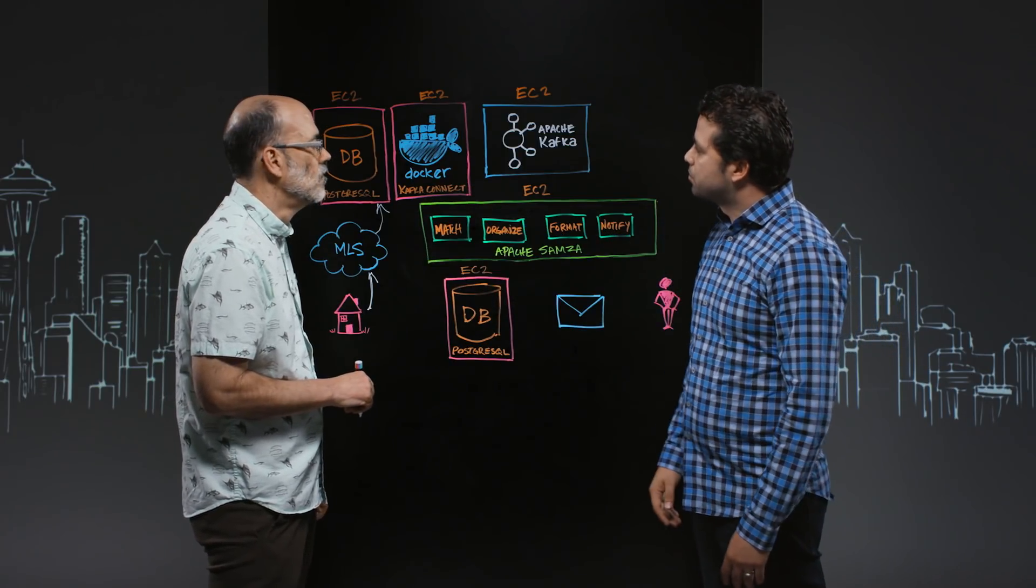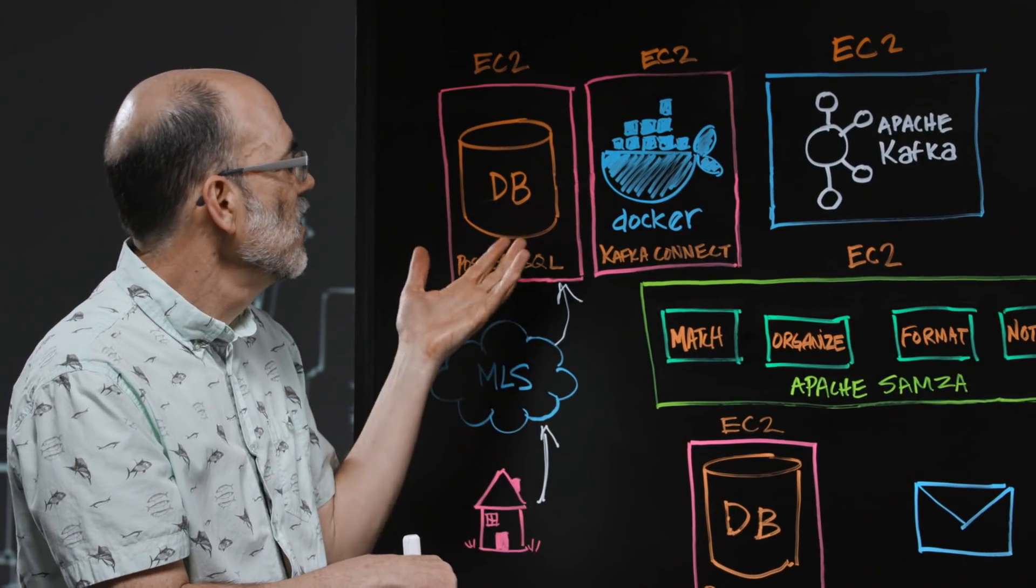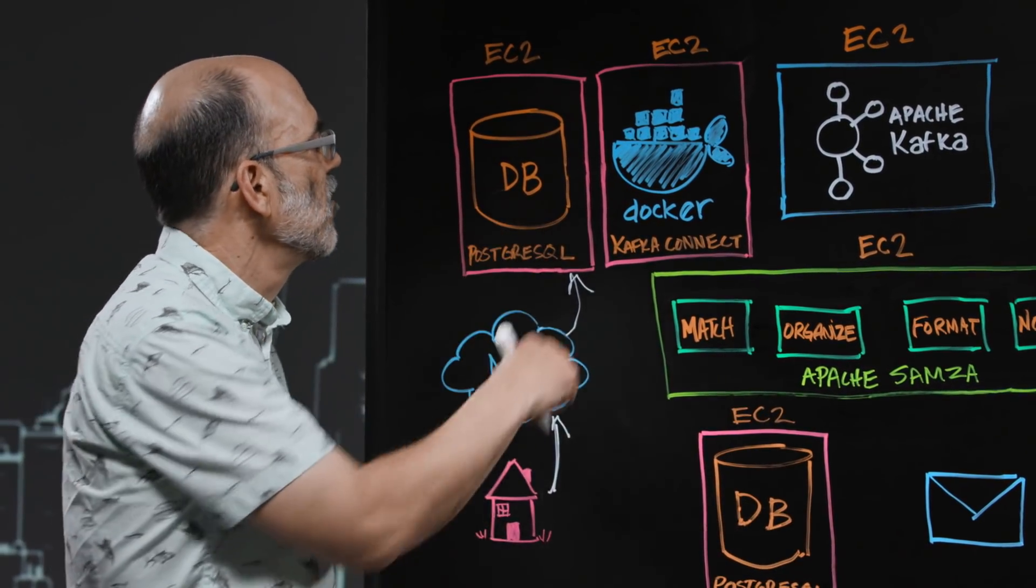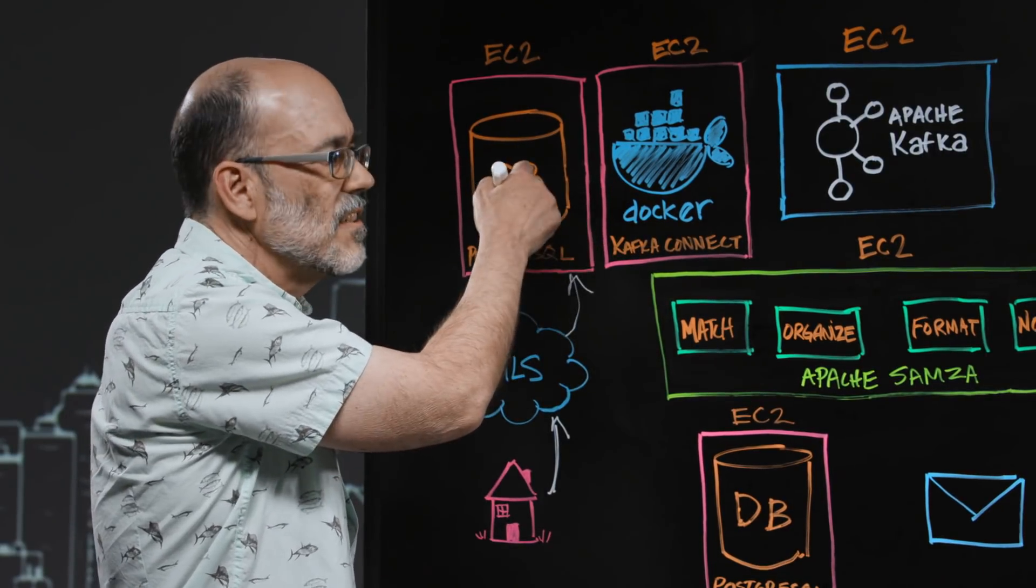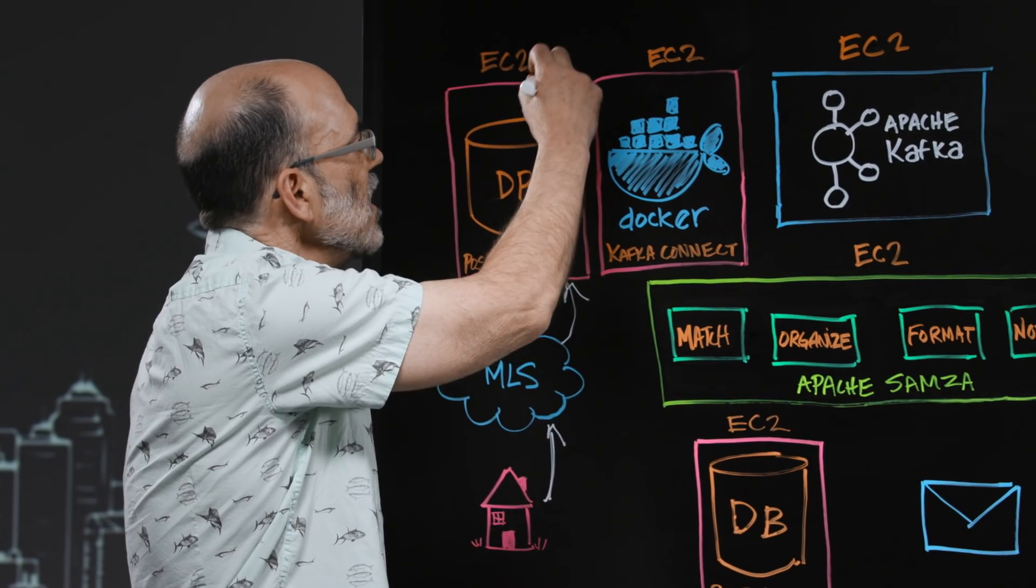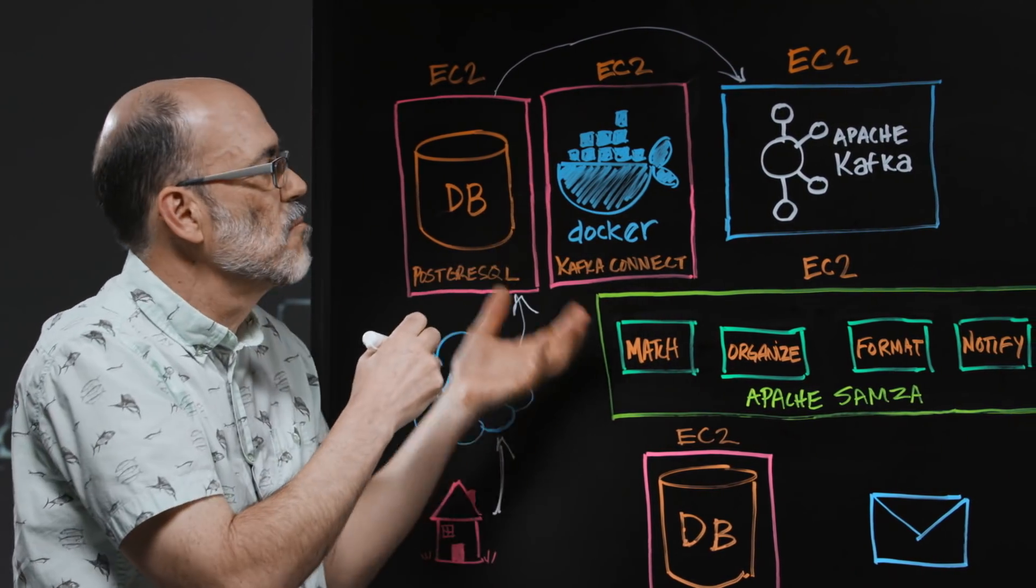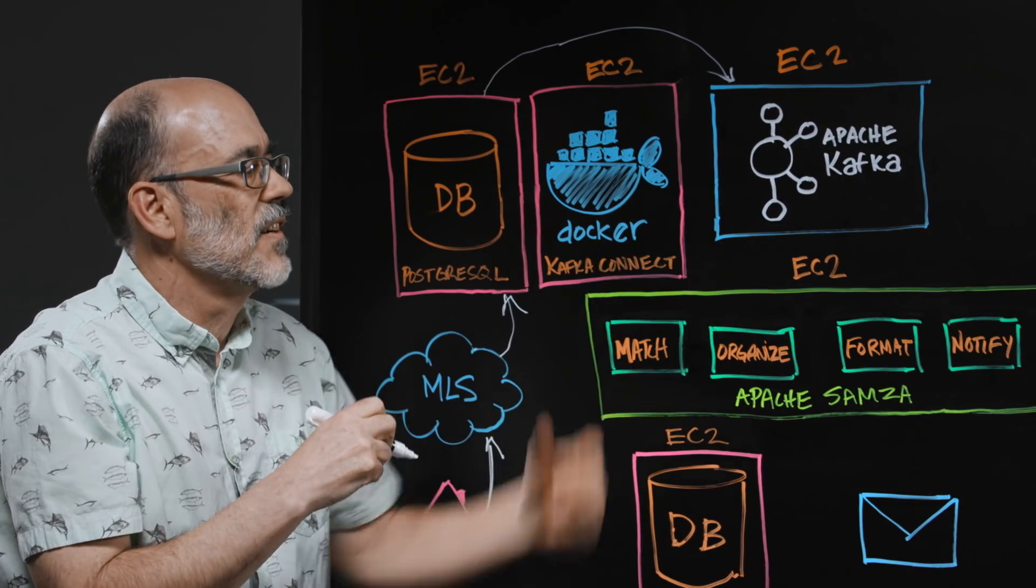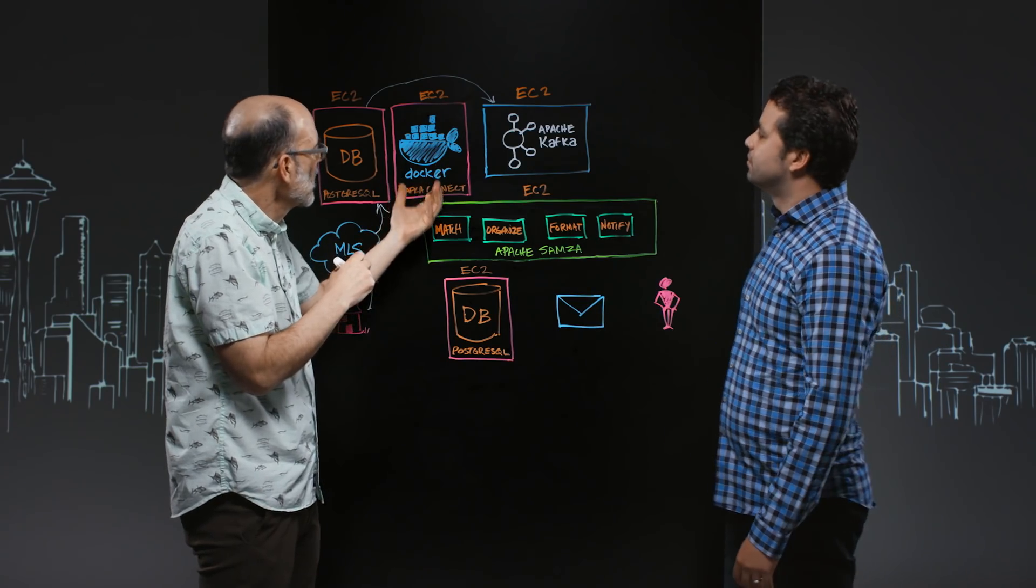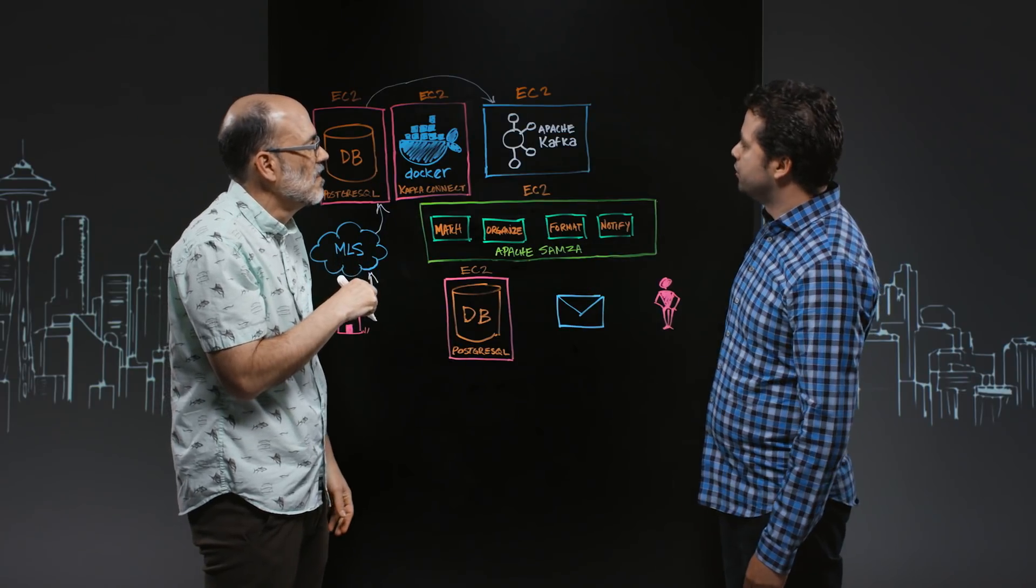This database which is running on EC2, what happens once the data is in there? We want to tell people about these events. The first thing is we have Kafka Connect that's listening to events in the database and basically publishes them, detects that something has happened, and publishes them to a Kafka topic. These are running in Docker, a single instance running on an EC2 instance.